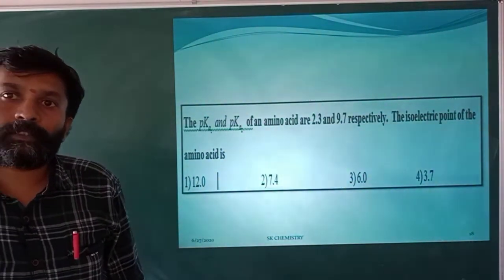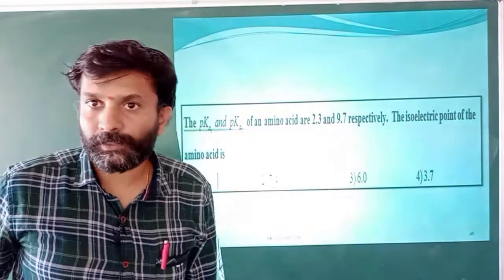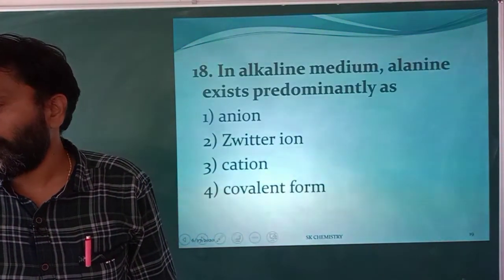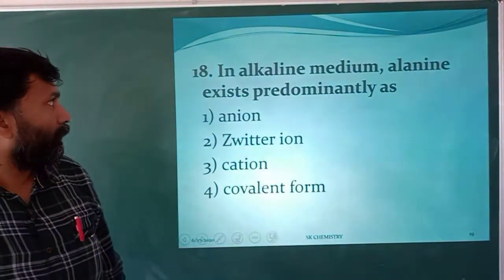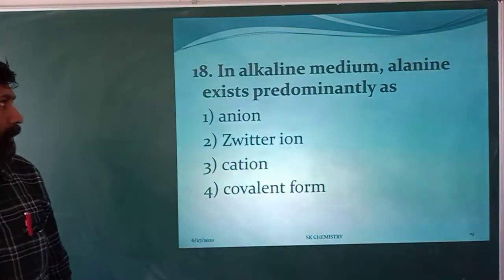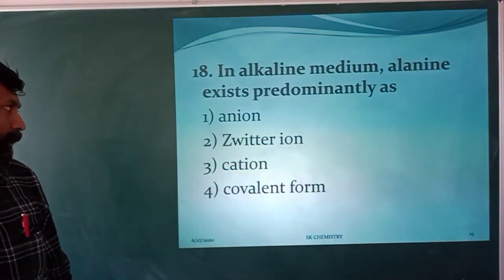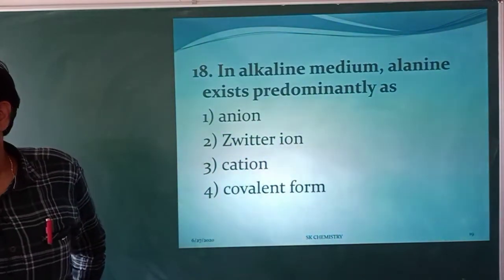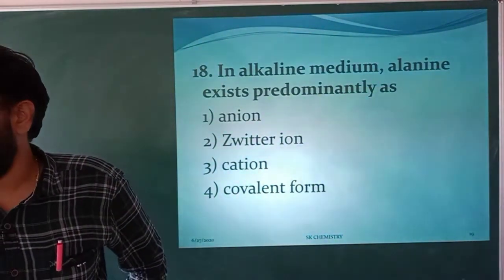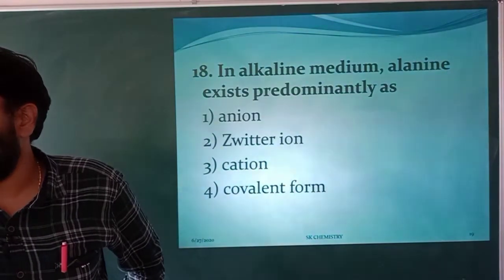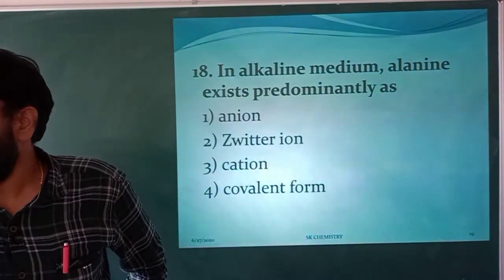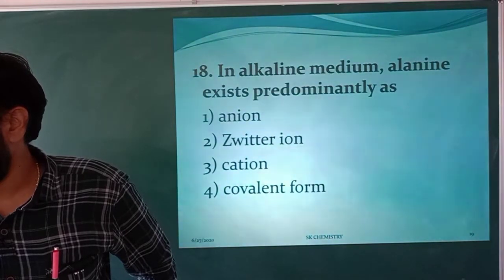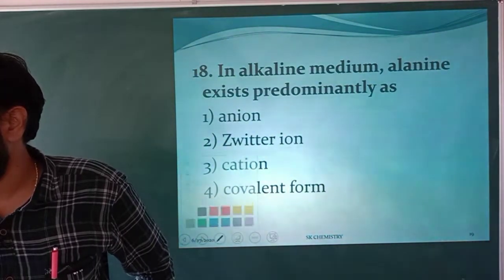We will proceed with the next question. In alkaline medium, alanine exists predominantly as: anion, zwitterion, cation, or covalent form? Alanine is an amino acid with a CH3 group.